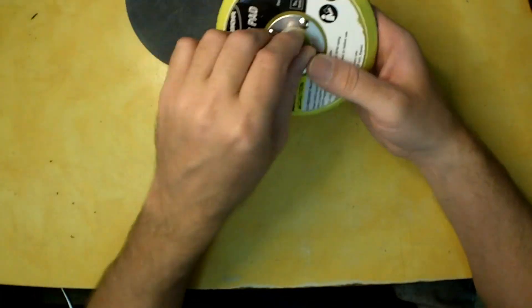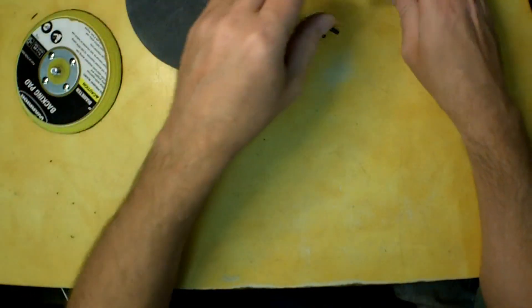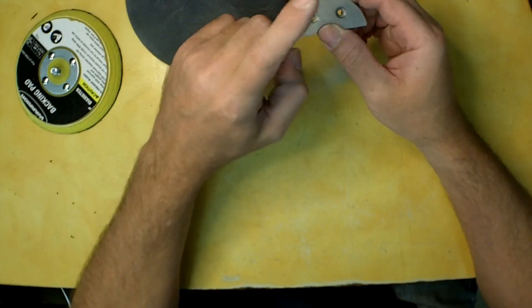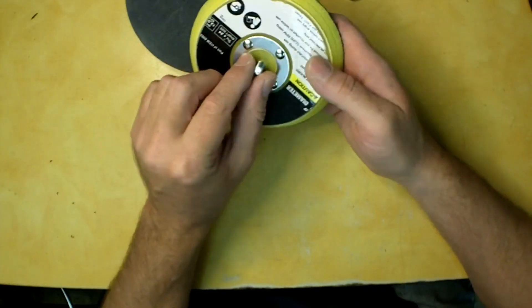I do think that you might want to explore picking up one of the Porter Cable five inch counterweights to match the five inch backer pad.